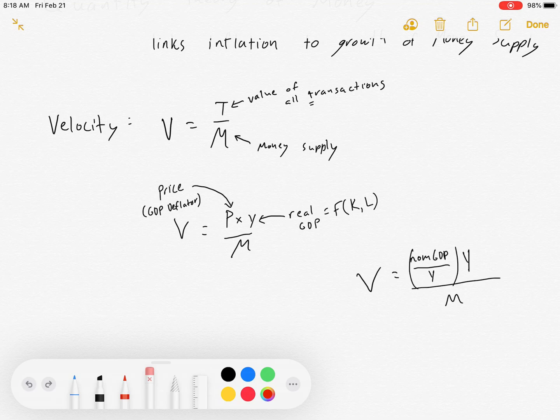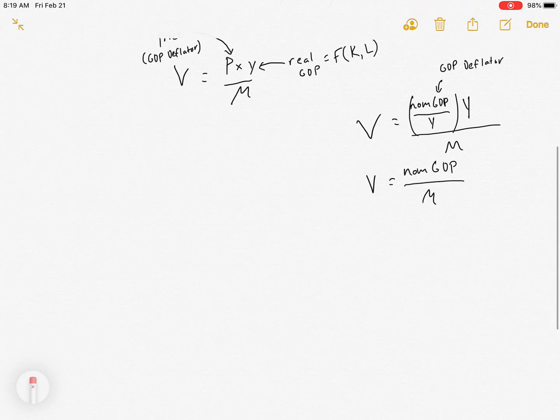So we could rewrite this as V equals P times Y over M, because Y is real GDP. You get the idea that the stuff in that parenthesis is the GDP deflator. I'm just showing you this as a digression to show that this is still the same as V equals T over M. But we're going to roll with V equals P times Y over M. That's the one we're going to be interested in.